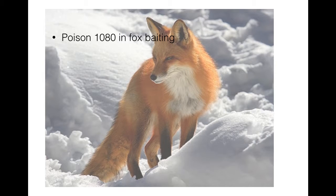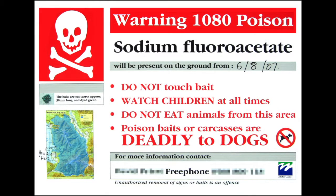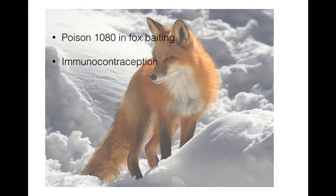Poison 1080 is used for fox baiting, as foxes are very susceptible to it while native animals are not affected. Contraception uses a chemical to make red foxes infertile, decreasing their birth rate, though this is a slow method. Dingoes, free-ranging dogs in Australia, can reduce the red fox population by hunting and killing them. Since dingoes kill but do not eat their victims, red foxes will fear them, and dingoes can be placed in habitats to protect their prey.